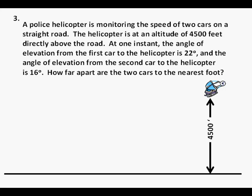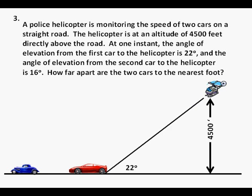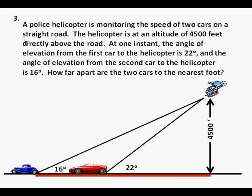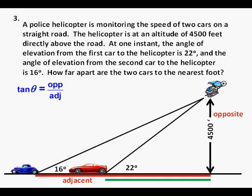For this problem I would definitely recommend drawing a picture of the situation. We have a helicopter 4,500 feet in elevation, and we have two cars that the police guy is checking on. The first car has an angle of elevation to the helicopter of 22 degrees, and the second car has an angle of elevation of 16 degrees. To find how far apart the cars are, we need to find the horizontal distance from the second car to the helicopter and subtract out the horizontal distance from the first car to the helicopter. In angular terms, we have the 4,500 feet as the opposite side of the angle and the horizontal side as the adjacent side. The trigonometric ratio linking opposite and adjacent is the tangent.